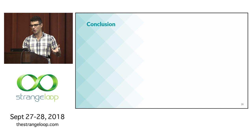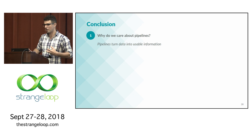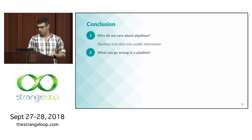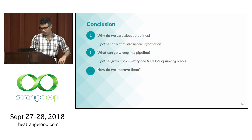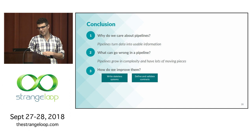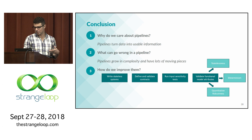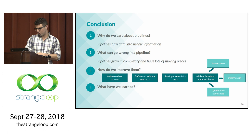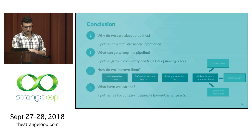Back to the questions I asked at the beginning: Why do we care about pipelines? Pipelines turn data into usable information, and most companies have data pipelines that impact how they function and help them make business decisions. What can go wrong? Everything — pipelines grow in complexity and have a lot of moving pieces. How do we improve them? Write stateless systems, define and validate your contracts, run input sensitivity tests, and validate your models as a function — testing attributes like statelessness, determinism, and quantitative robustness. And what have we learned? Pipelines are too complex to manage themselves. Think about quantitative reliability, and consider making a team or really focusing in on these issues. Thank you so much and have a lovely evening — I'm happy to answer questions or hang around after the talk.